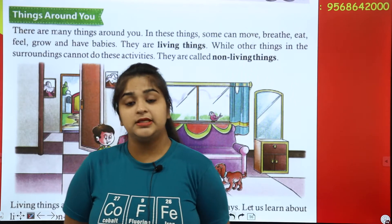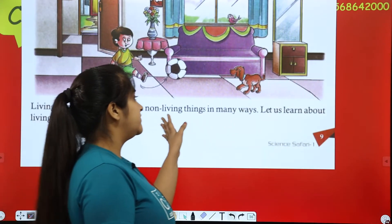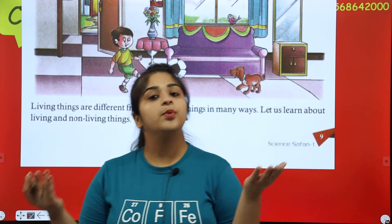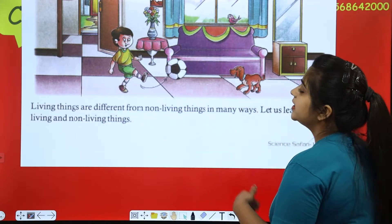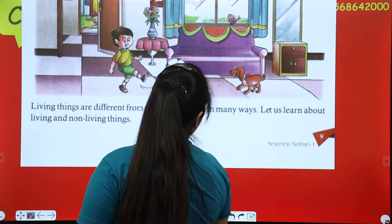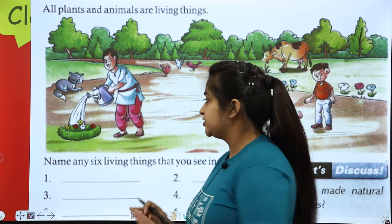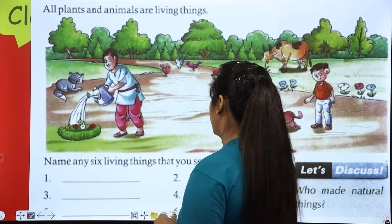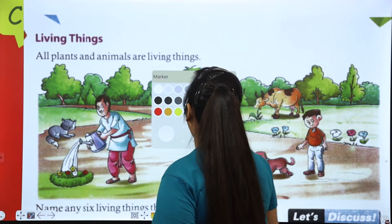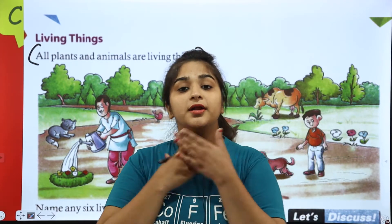And those things that cannot do this work are called non-living things. Living things are different from non-living things in many ways. Open page number 10 now. All plants and animals are called living things, and we are also called living things.